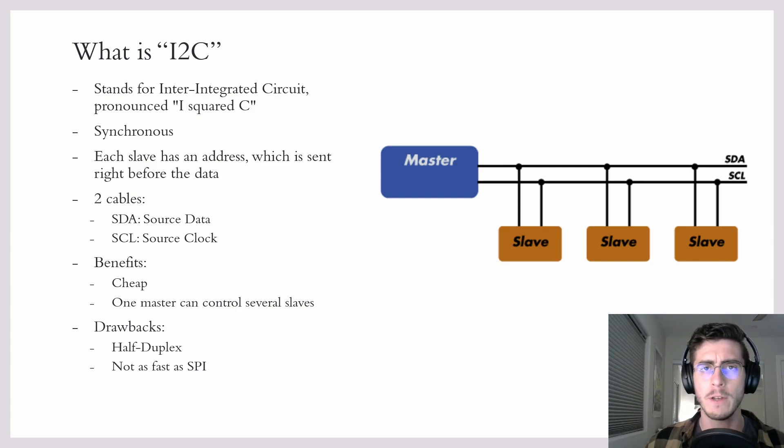It's different from SPI in the sense that there are only two cables: you have the data line (SDA) and you have the source clock line (SCL). This has various drawbacks and benefits depending on how you look at it. This is different from SPI where there was a dedicated chip select line for each slave device.